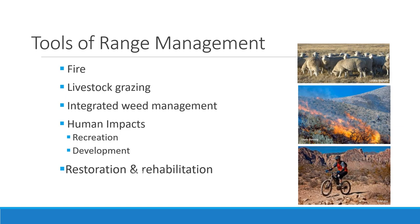So in summary, the tools of range management are: fire — whether prescribed fire or changing the natural fire regime; livestock grazing as a way to harness herbivory, which is a powerful tool to change ecosystems; integrated weed management to address invasive plants; ways to mediate or enhance human impacts such as recreation and development; and restoration tools — plowing, shredding, or reseeding — to physically change ecosystems through restoration or rehabilitation.